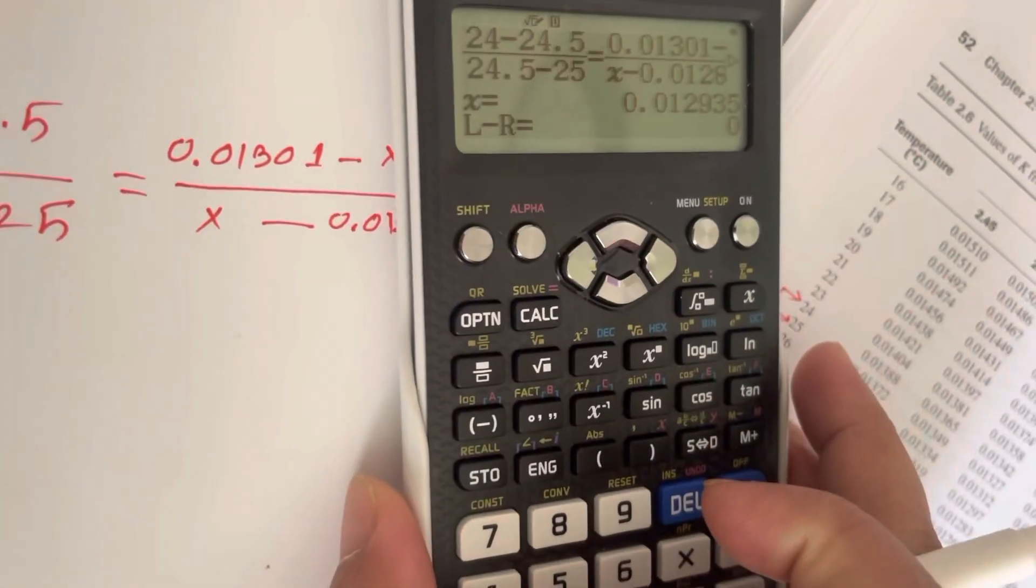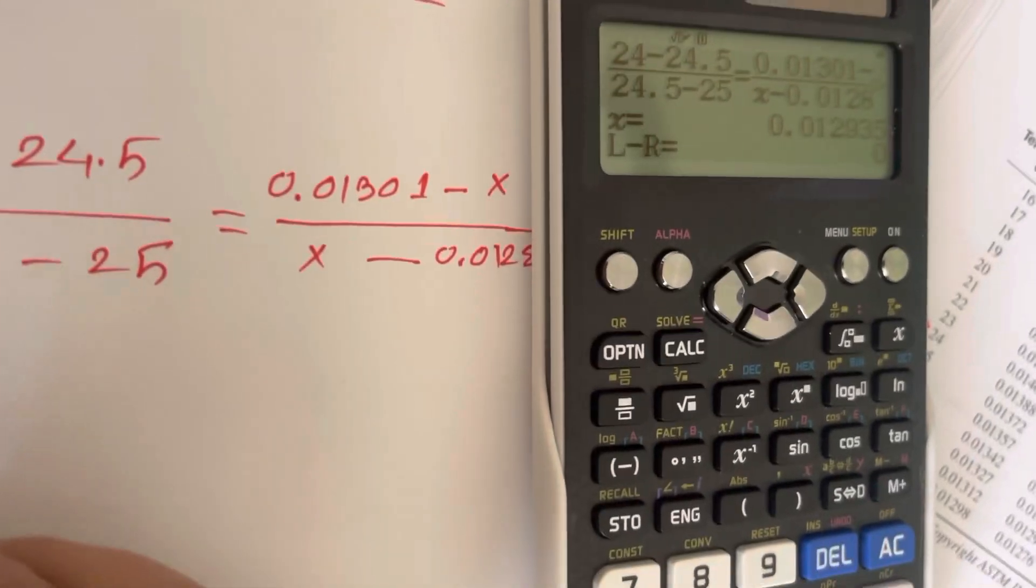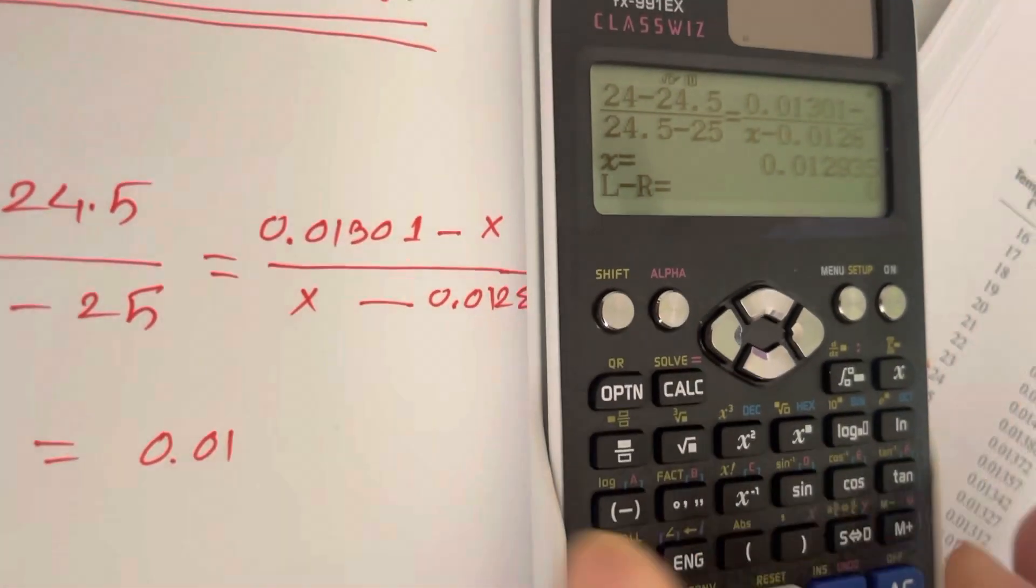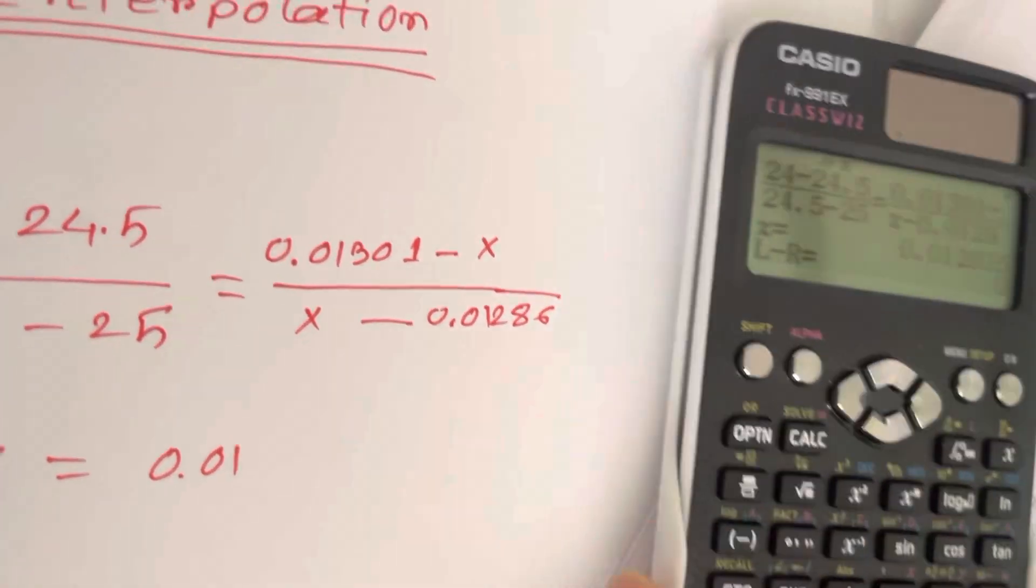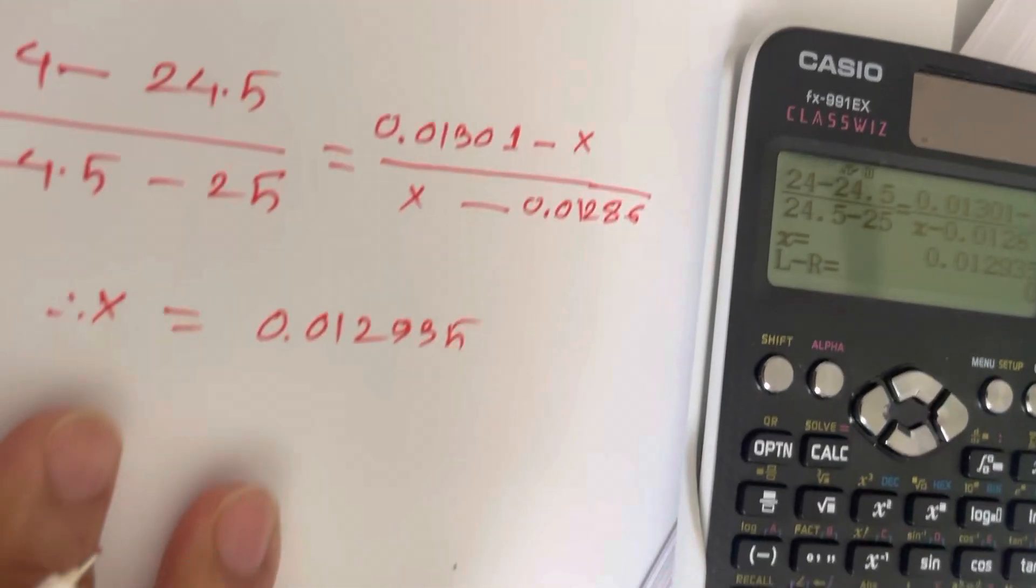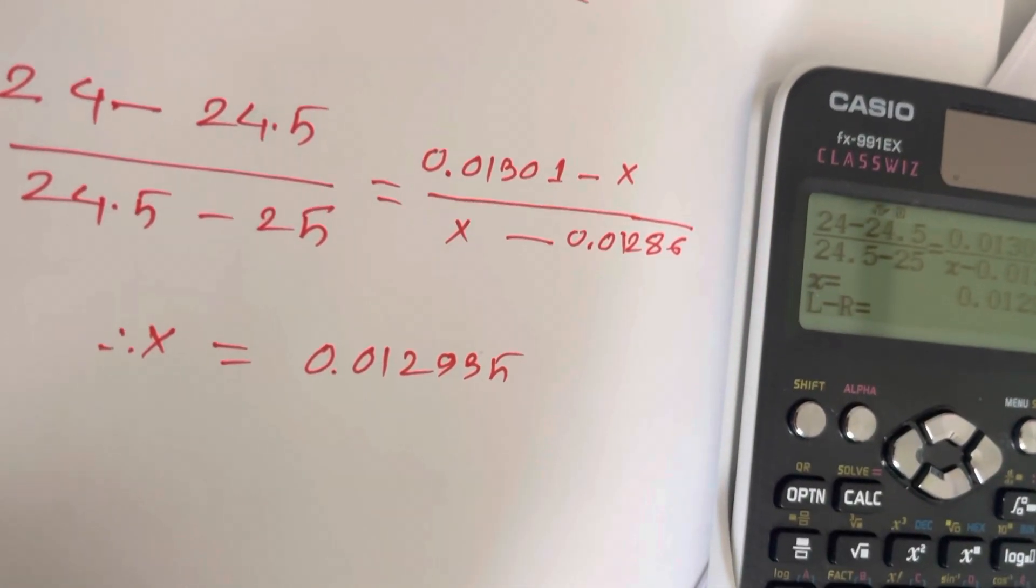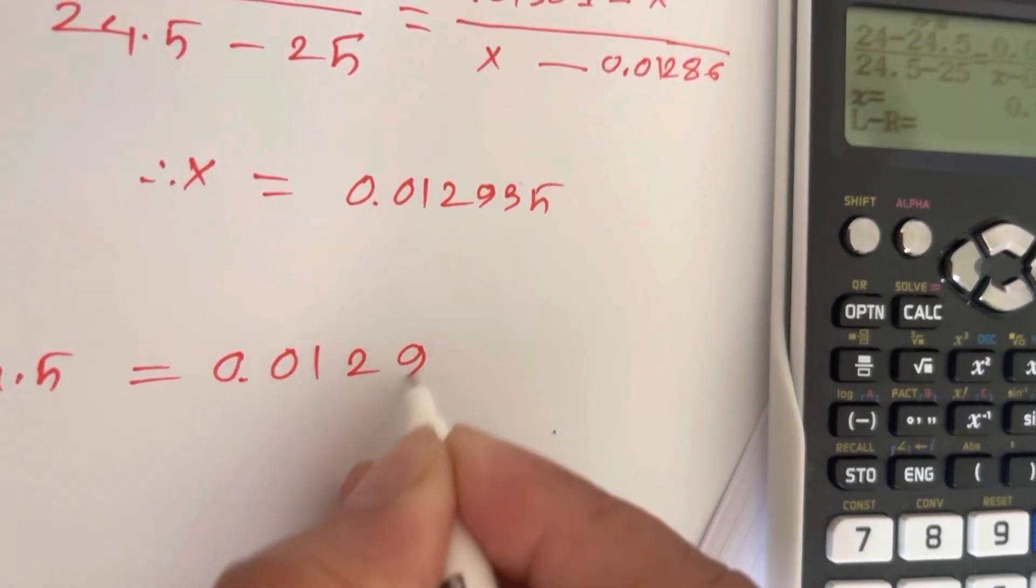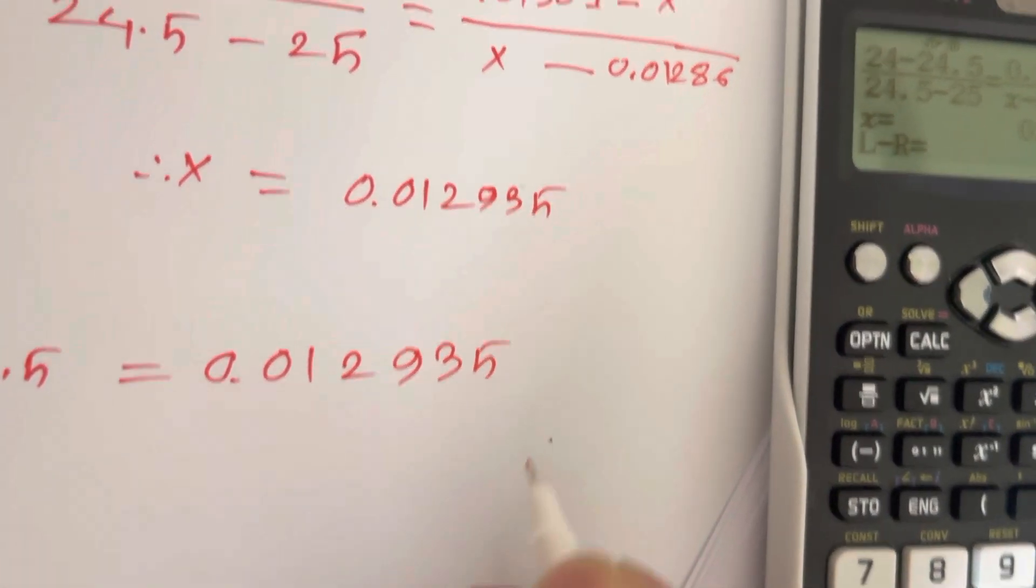The result is 0.0. Now x is equal 0.012935. So for 24.5 its corresponding value is 0.012935. That's it.